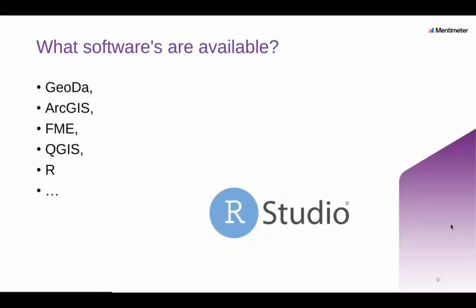There are various softwares available for spatial analysis: GeoDA, ArcGIS, FME, QGIS and R. Spatial data analysis, geovisualization, spatial autocorrelation, and spatial modeling can all be done within these softwares. For this workshop we'll be using R and its IDE RStudio. I've chosen R because there's an increasing amount of packages available for spatial analysis, mapping and modeling, and R has been an increasingly popular tool over the last decade.